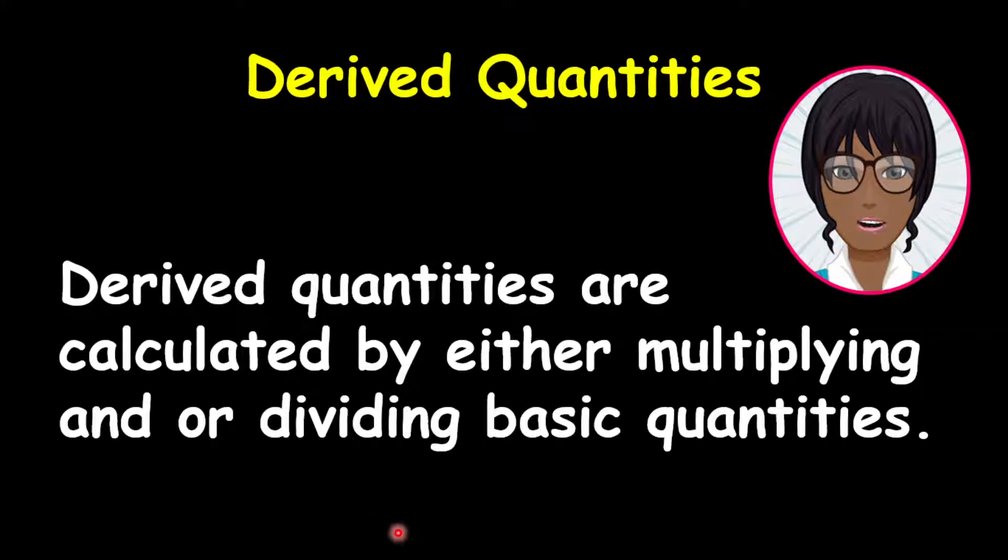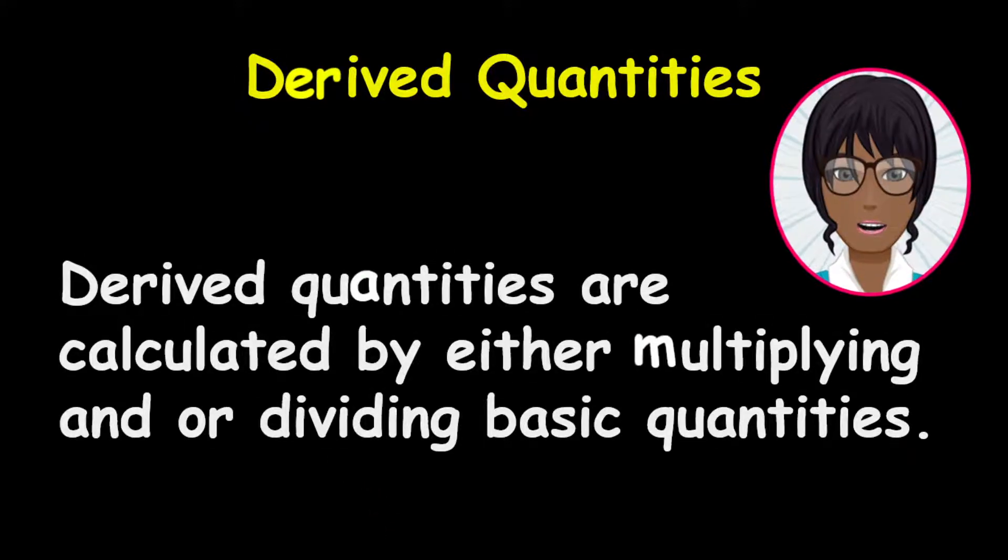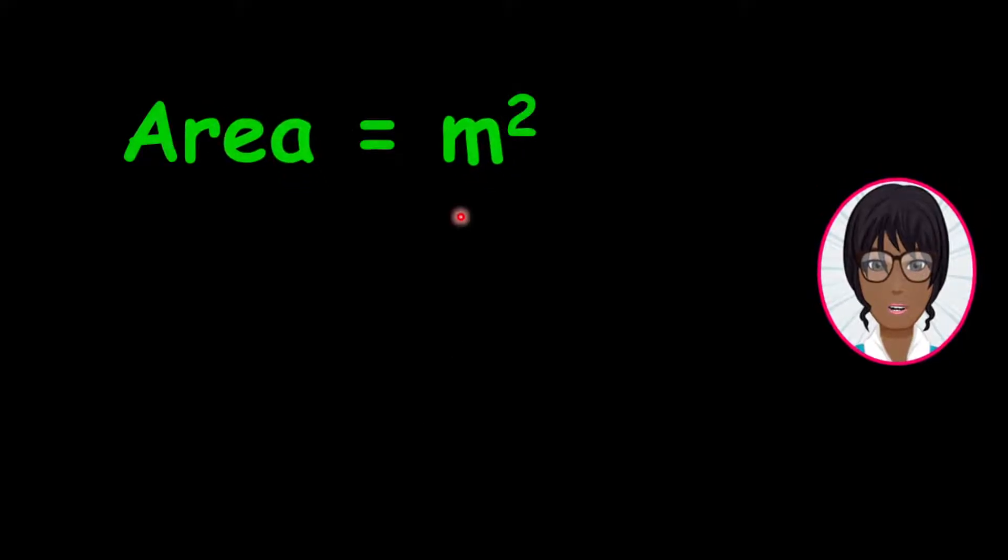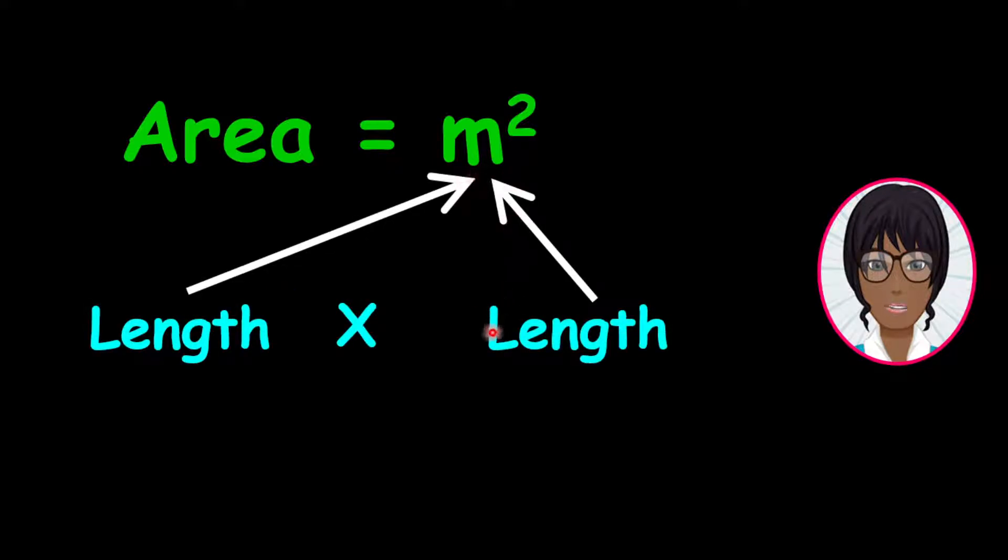Let us look at some examples. Area is measured in meters squared. Therefore, the unit of area is meters squared. Look at the unit closely. This means that area is a combination of length and length. In your mathematics class, you may call these lengths base, height, or width. Notice that the combination here is a multiplication of length.